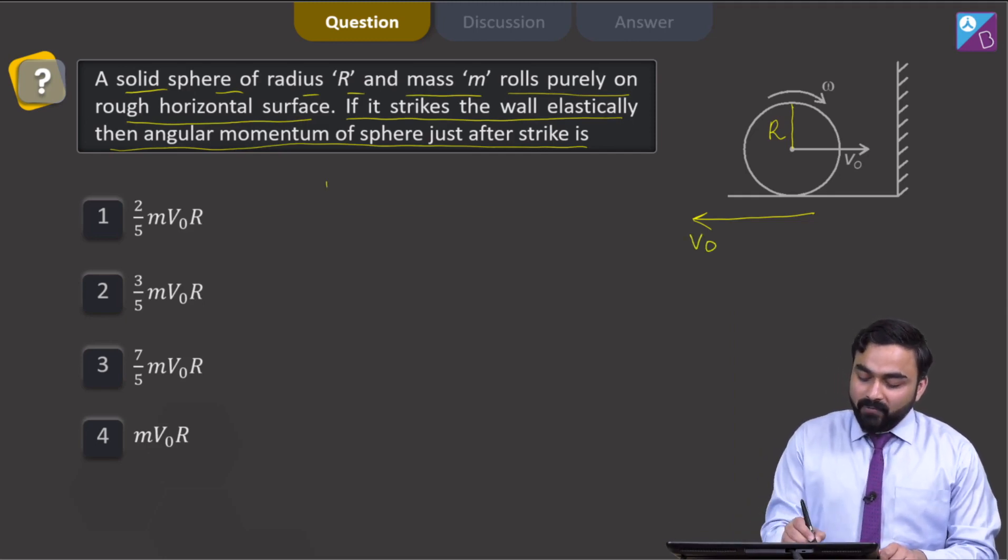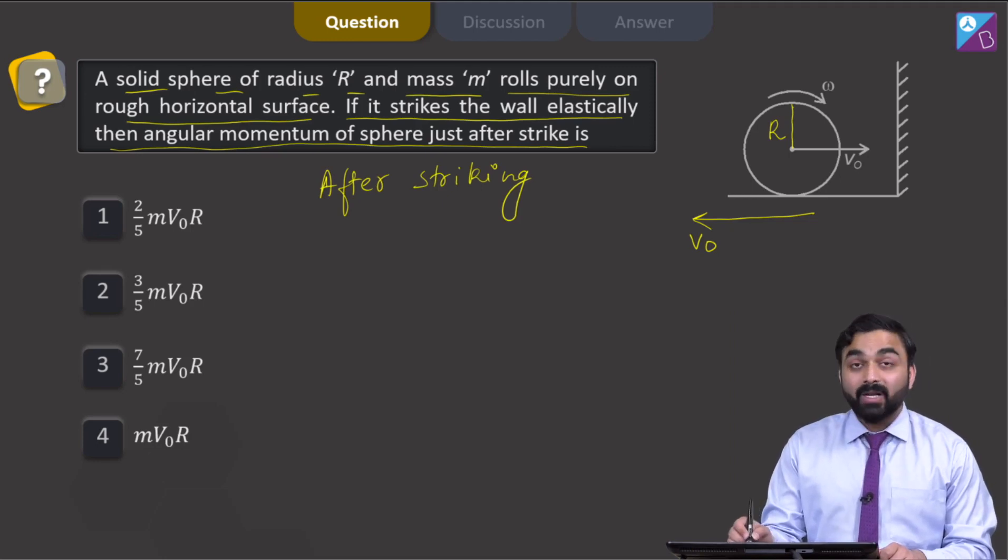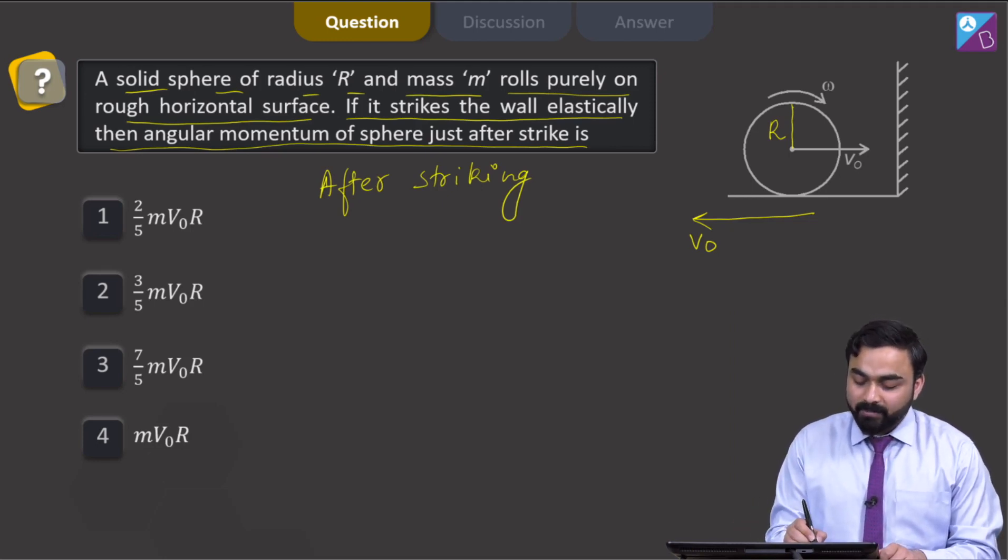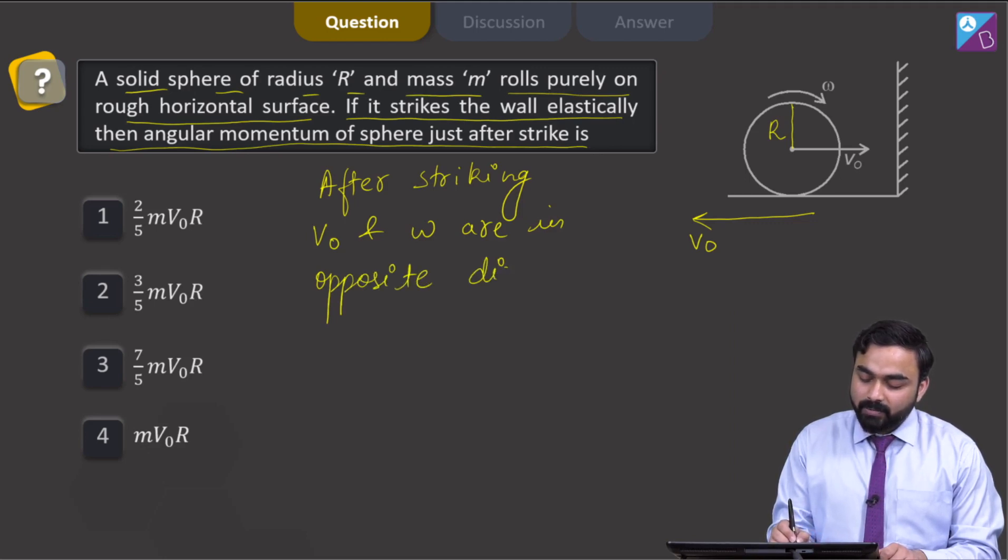So after striking, when this solid sphere will be returning, at that time V 0 and omega are in opposite direction.